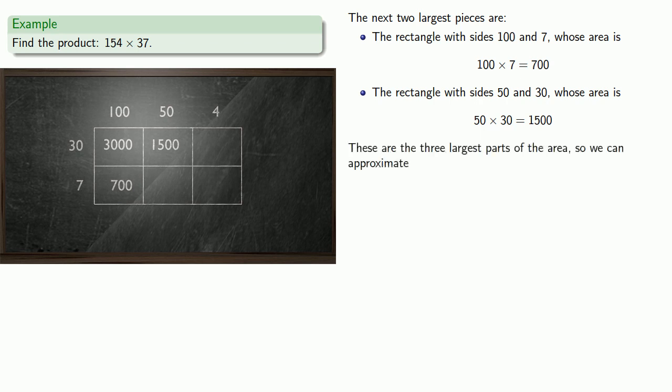So we can approximate 154 times 37 as the sum of the areas of these three pieces. 3,000 plus 700 plus 1,500, or 5,200.